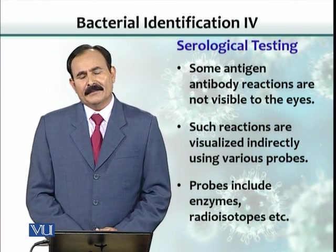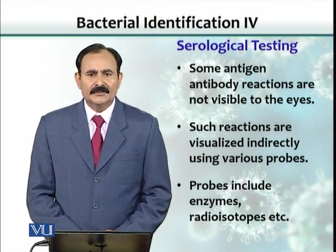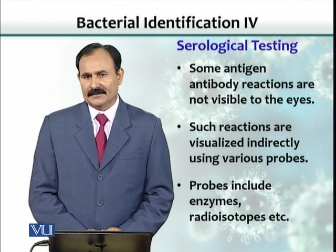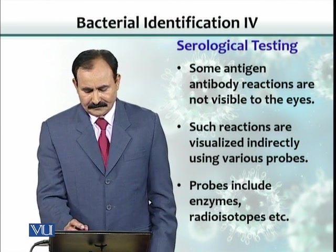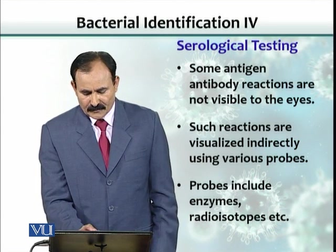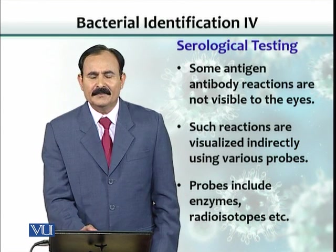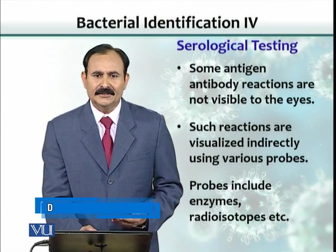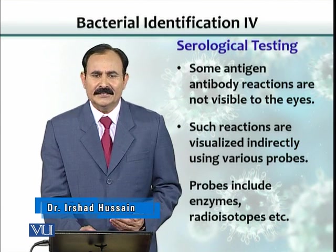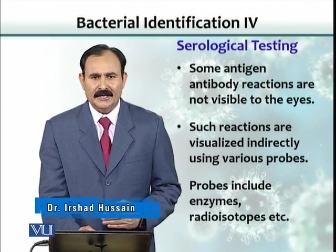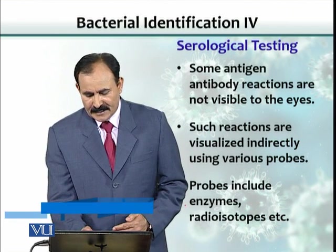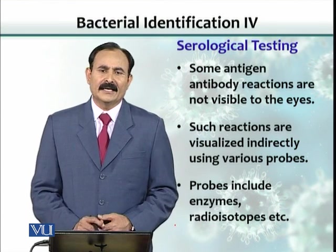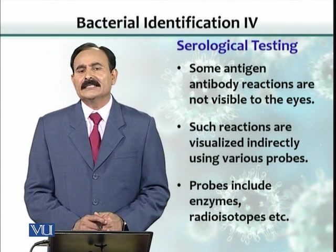ELISA is one such method. This antigen-antibody interaction is not visible to the eye, so in order to make it visible, we modify the system using what we call probes. Probes are extensions into the system that tell us whether an antigen-antibody interaction has occurred or not. Those probes could be enzymes, radioisotopes, or fluorescent dyes.